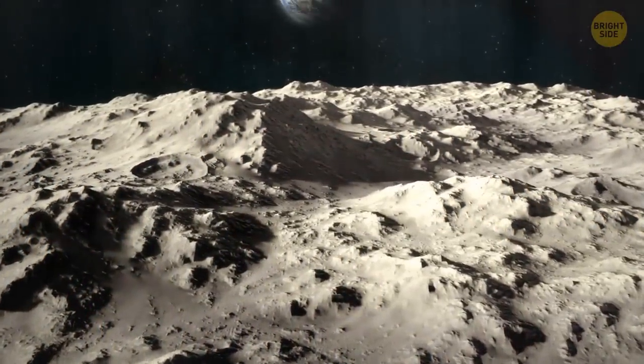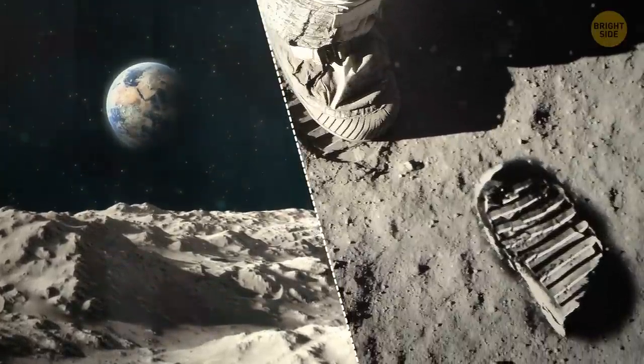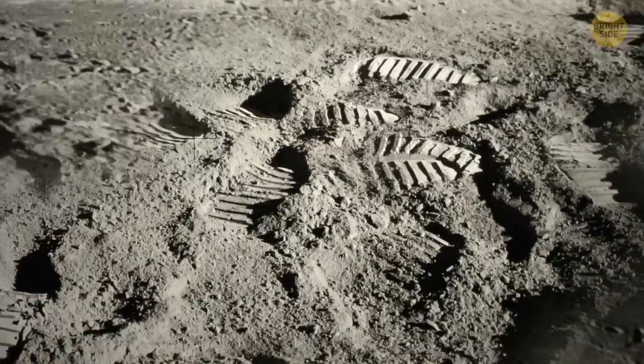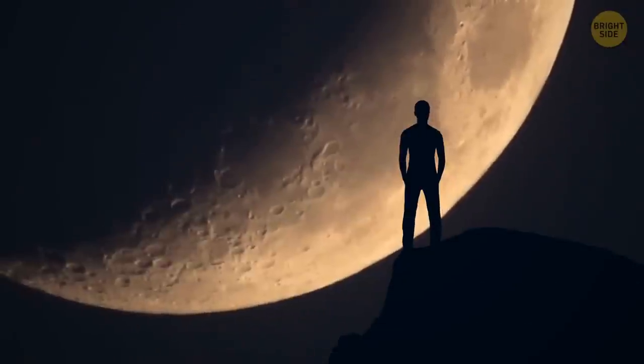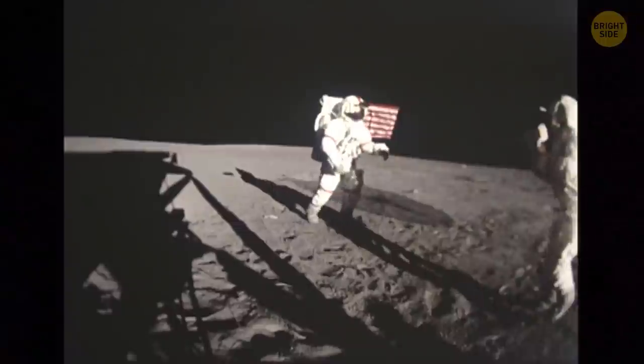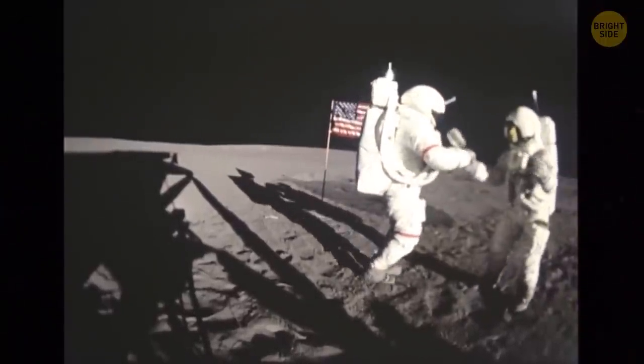If you manage to go to the Moon one day and see fresh footprints, that doesn't mean there's someone else there with you. Footprints or similar marks can last for a million years over there. Because the Moon doesn't have an atmosphere, there are no winds, not even a breeze, that can slowly erase those footprints.